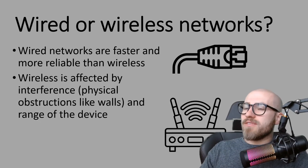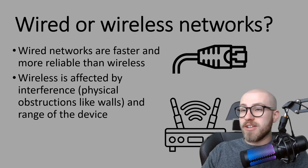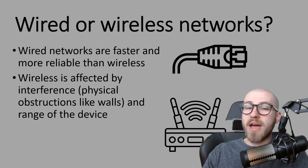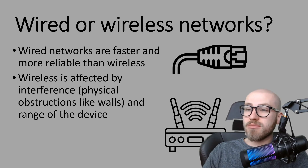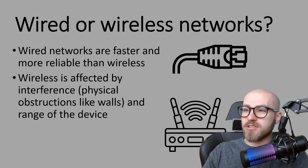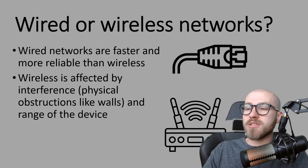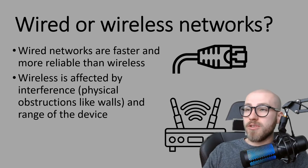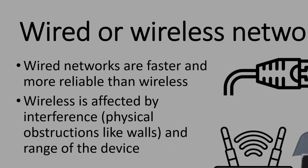Wireless is affected by interference, which includes physical obstructions like walls and doors. For example, if you're sat upstairs in your bedroom using a wireless network to connect to your router downstairs with the door closed, that is a physical obstruction and it will affect the performance of your device. Also, devices have only got limited range, so if you live in a large house and your bedroom is further away, that will also affect wireless performance.